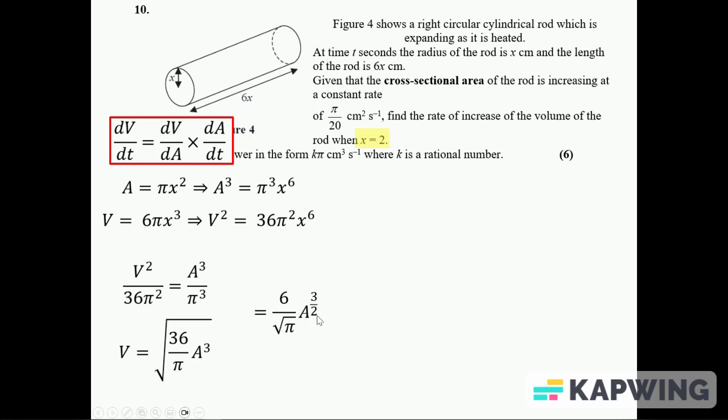I want dV over dA, so we differentiate this. The 3/2 goes in front giving me 9, I've still got that root π on the bottom, and then A to the power of 1/2.